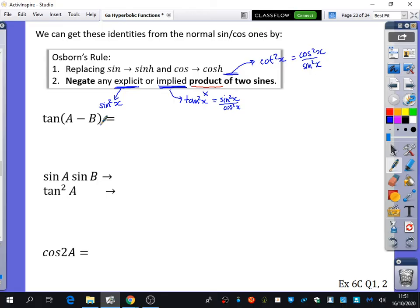So what's the tan of A minus B? Tan A minus tan B over 1 plus tan A tan B.